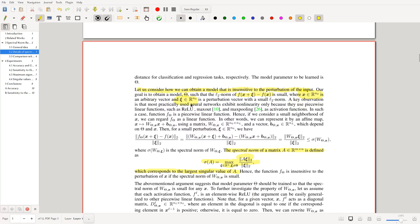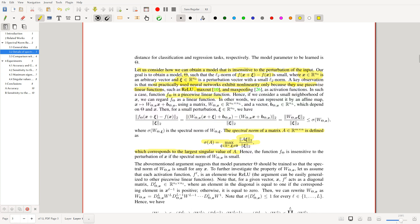So a key observation is that most practically used neural networks exhibit non-linearity only because they use piecewise linear functions at activation like ReLU, max out and max pooling. Even leaky ReLU. In such a case, F of theta is a piecewise linear function, right? Because affine transformations are affine, and if we compose them with piecewise linear functions, then we get piecewise linear functions. So if we consider a small neighborhood, what we can do is kind of consider that it's a linear function. And what we can do is we can represent it by an affine map.